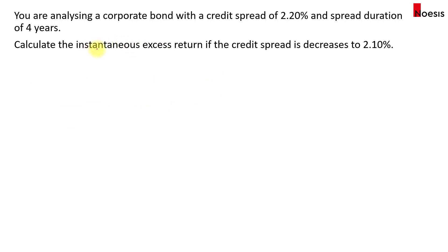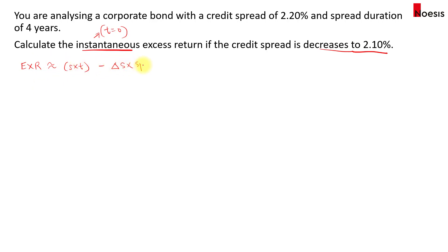Now another example: let's say the instantaneous excess return if the credit spread decreases to 2.1% the moment you buy the bond. When you see the keyword instantaneous, it means the holding period is 0 — it happens immediately. So if T equals 0, the first term and the third term will equal 0 since the holding period is 0. That leaves us with only the second term.